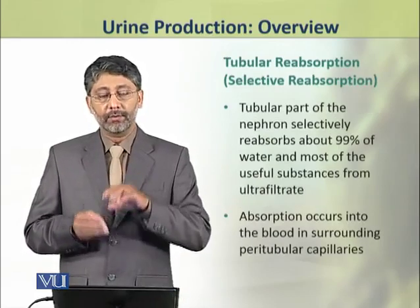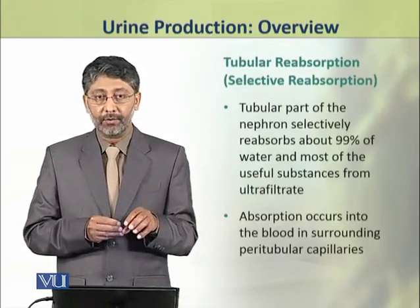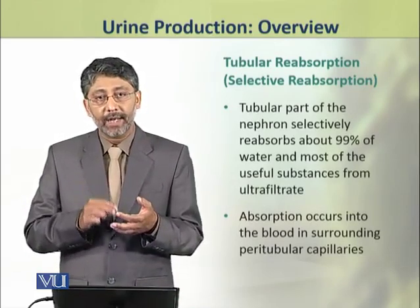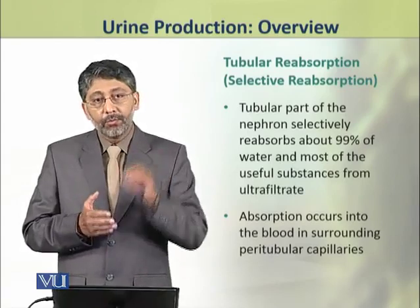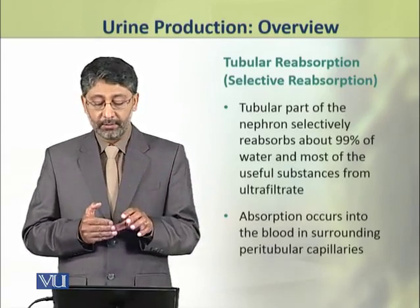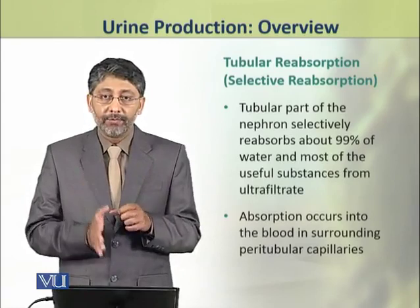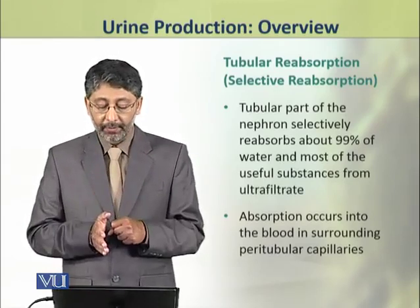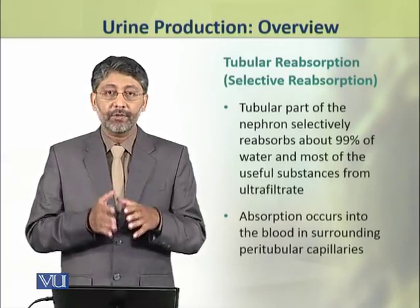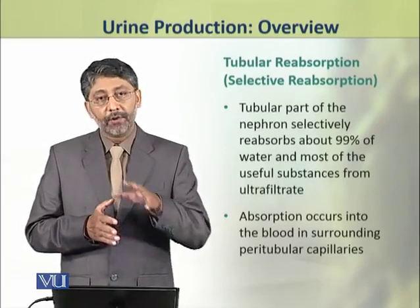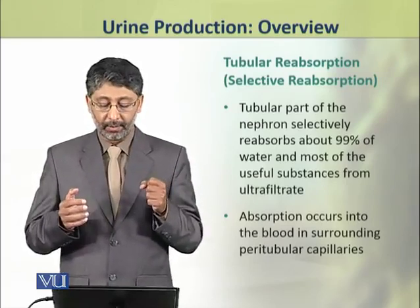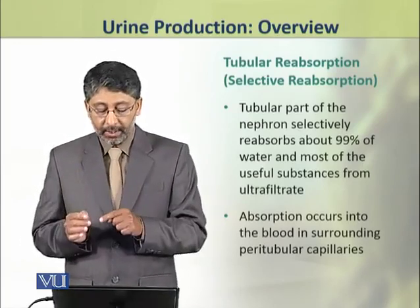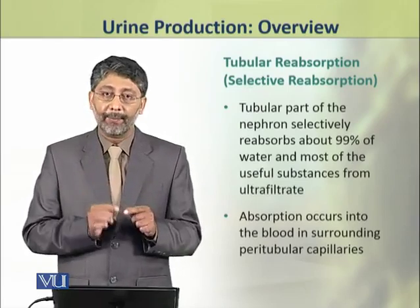The second step of urine formation is tubular reabsorption, or selective reabsorption. The tubular part of the nephron selectively reabsorbs about 99% of water and most of the useful substances from the ultrafiltrate. This absorption occurs into the blood by the surrounding peritubular capillaries.